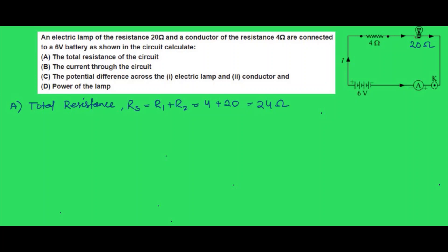So the total resistance of the circuit is 24 ohm. Now let's find the current through the circuit. We have the potential difference V = 6 volts and the resistance is 24 ohm, so we can find the current using Ohm's law.